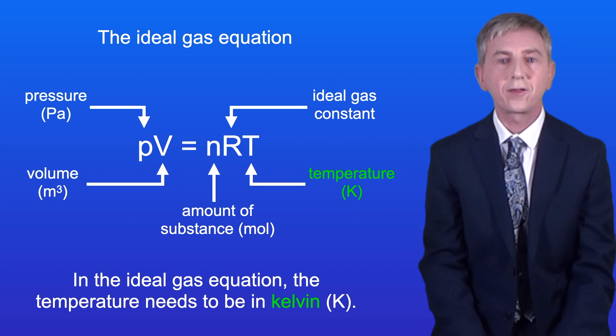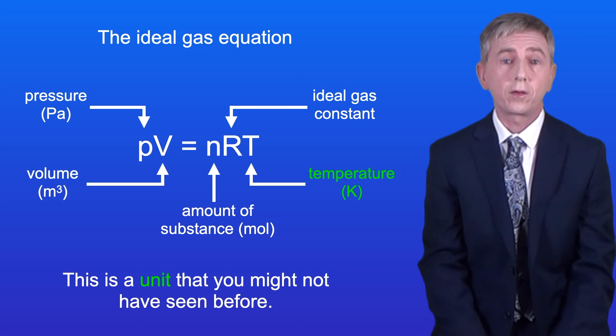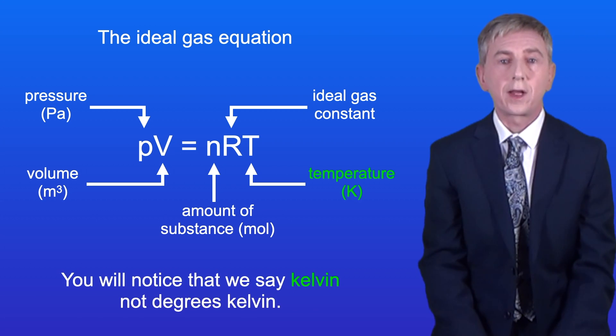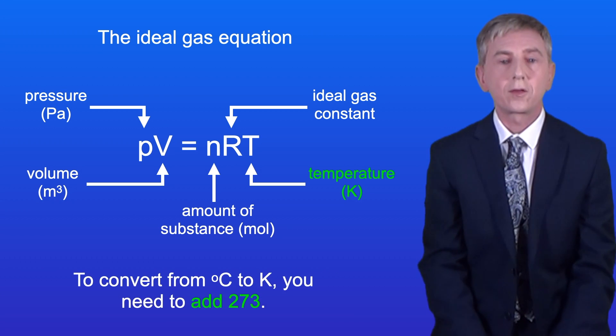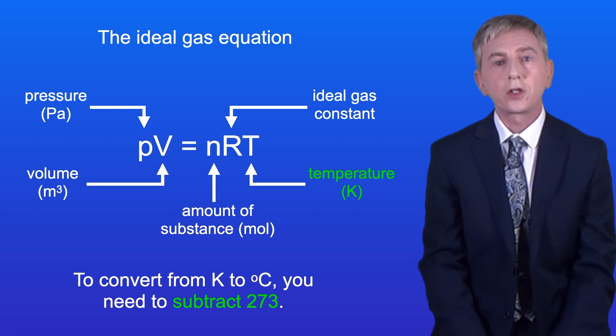Okay, now in the ideal gas equation the temperature needs to be in Kelvin, and this is a unit that you might not have seen before. You'll notice that we say Kelvin, not degrees Kelvin. To convert from degrees Celsius to Kelvin, you need to add 273. And to convert from Kelvin to degrees Celsius, you need to subtract 273.